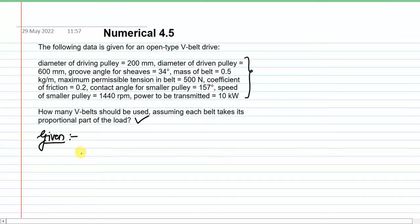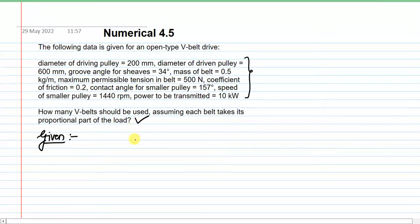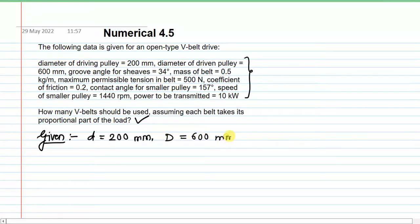First, we write down the given data to organize it for the solution. The first given item is the diameter of the driving pulley: D = 200 mm. The diameter of the driven (larger) pulley is 600 mm. The groove angle for sheaves in this V-belt drive is θ = 34 degrees.